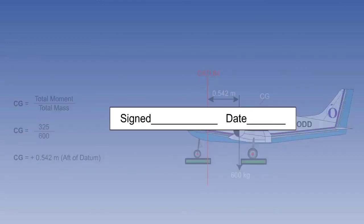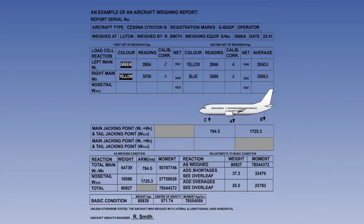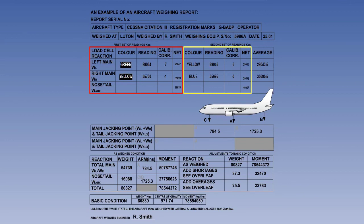The person responsible for completing the weighing schedule must sign and date it, and the schedule is then retained in the aeroplane technical log until the next weighing. As an example, a more complex large aeroplane weighing report is produced here. You will notice that two sets of readings are taken and a net mass recorded, which is then subject to some adjustments before arriving at the final total mass. The schedule is signed at the bottom by the responsible engineer.